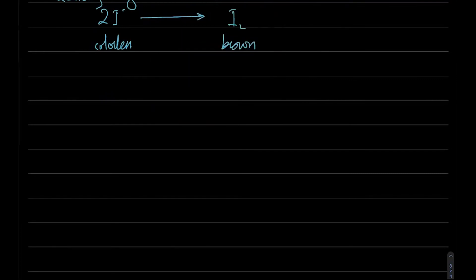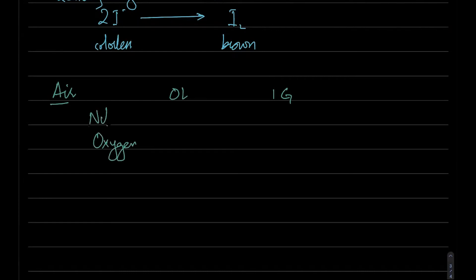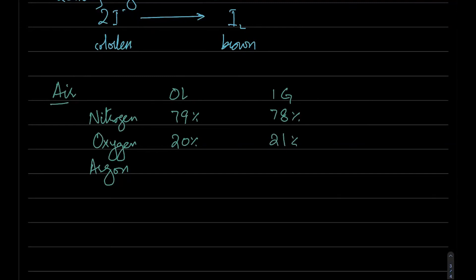For air composition: at O level, nitrogen is 79% and oxygen is 20%; at IGCSE, nitrogen is 78% and oxygen is 21%. The remainder is mainly noble gases — most importantly argon — and carbon dioxide.